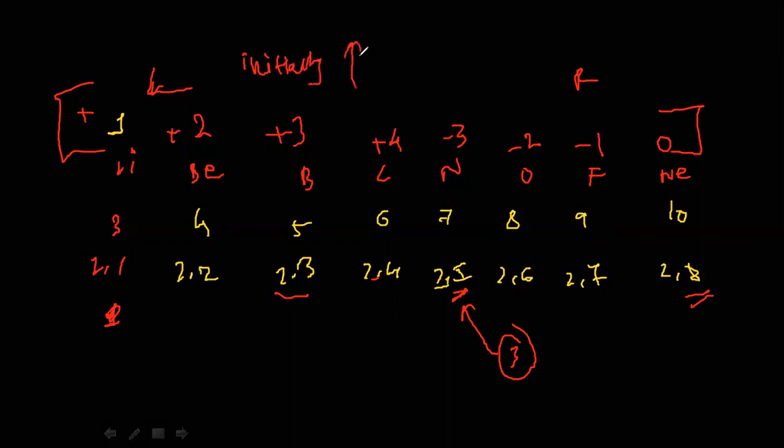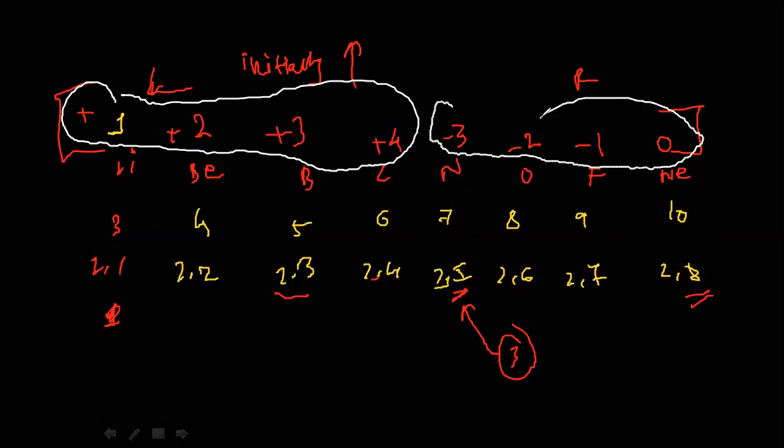See this from one to four. Valency initially increases from one to four and then it decreases from four to zero. So you can say initially increase and then it decreases. So this is all about valency in the modern periodic table.